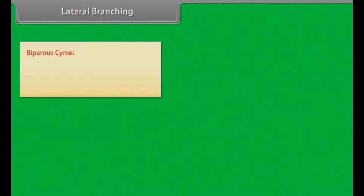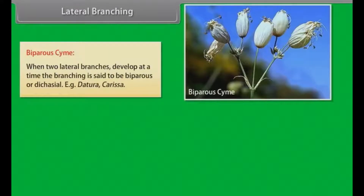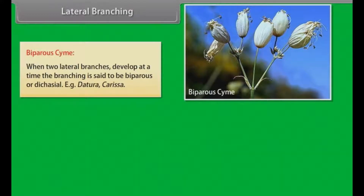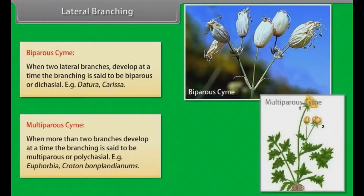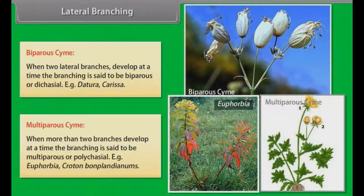In biparis cymose, when two lateral branches develop at a time, the branching is said to be biparis or dicasial. Examples: Datura, Carissa. In multiparis cymose, when more than two branches develop at a time, the branching is said to be multiparis or polycasial. Examples: Euphorbia, Croton bonplandianus.